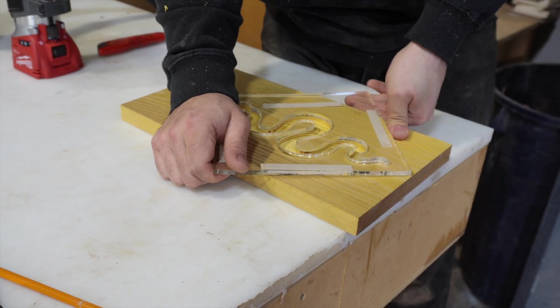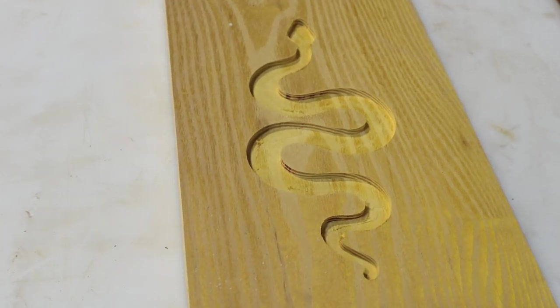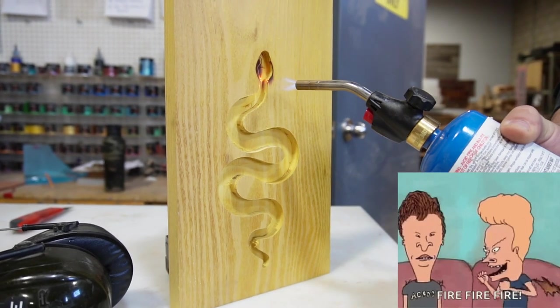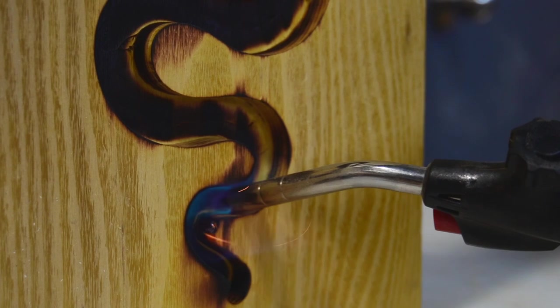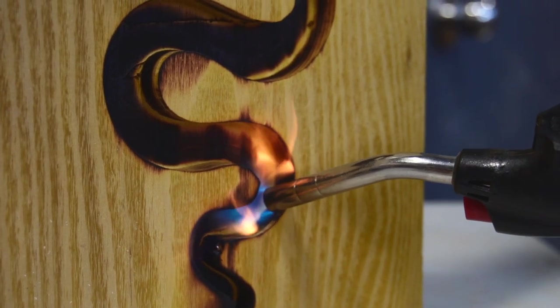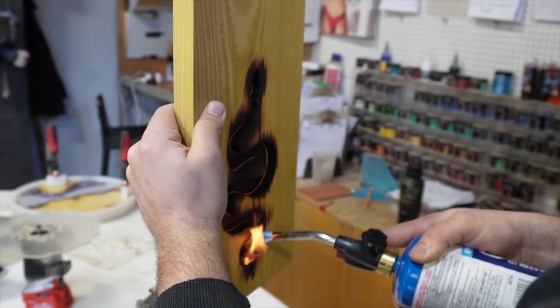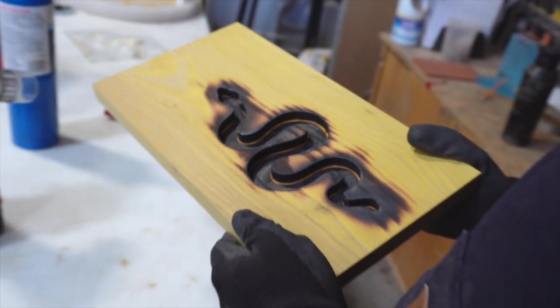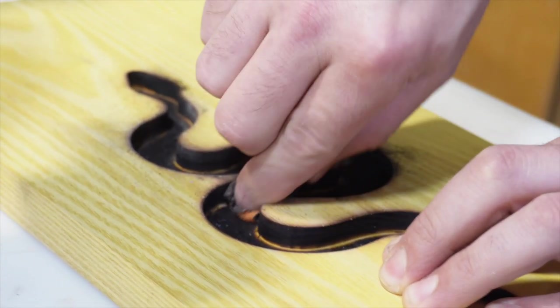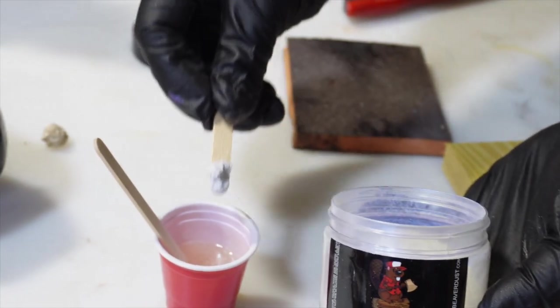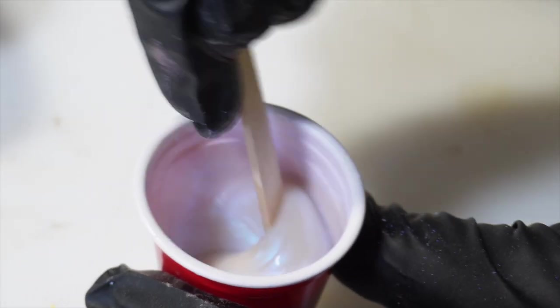Once we've got our desired depth, we remove the template and then we grab our torch to make the inside of the cutout black. Once we're done with the torch, we just give it a quick sand on the surface and we use a sanding block just to take down any high spots. The technique we're using here is similar to the first project where we're mixing up a ghost blue pigment and applying it over a black base.